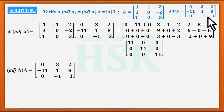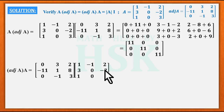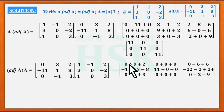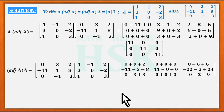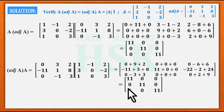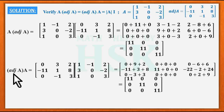Further, adjoint of A into A is computed as the product of these two matrices. On multiplication and totaling, we again get 11 0 0 / 0 11 0 / 0 0 11. So we get that A into adjoint of A equals adjoint of A into A, confirming both products yield 11·I.